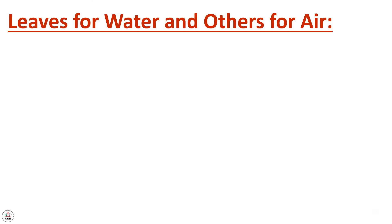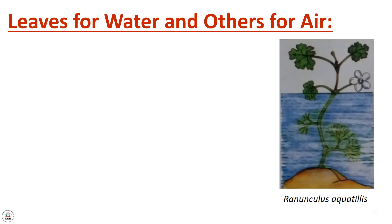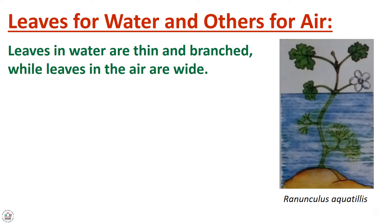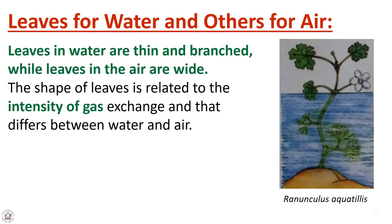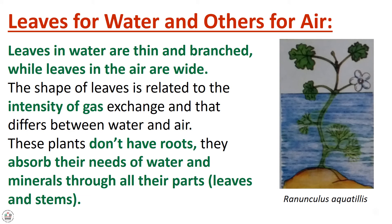Let's study how leaves behave in water versus in air. Looking at the plant Ranunculus aquatilis: leaves in water are thin and branched, while leaves in the air are wide. The shape of leaves is related to the intensity of gas exchange, which differs between water and air. These plants don't have roots; they absorb their needs of water and minerals through all their parts — leaves and stems.